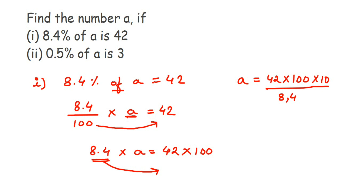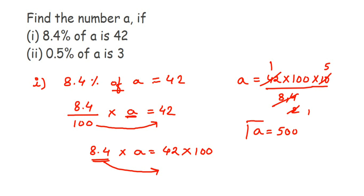Now do the cancellation. 42 twos are 84, so we can cancel 84 with 42 — 42 goes once. Then cancel 2 and 10: 2 fives are 10, so we're left with 5. Then 5 × 100 = 500. So a = 500. That means 8.4% of 500 is 42. That's how we solve it.